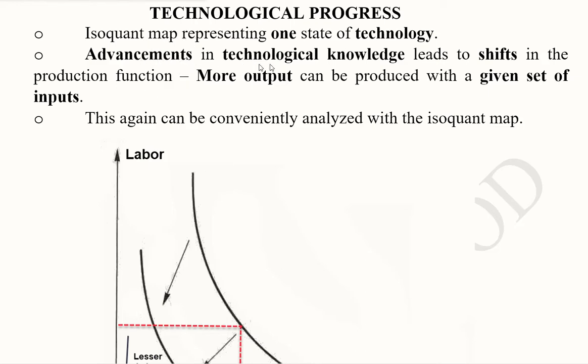So the advancements in the technological knowledge can lead to shifts in the production function and more output can be produced with a given set of inputs, because the same labor and capital will become more productive if there is a better technology.